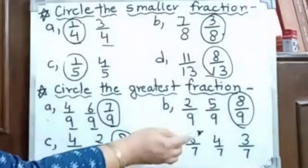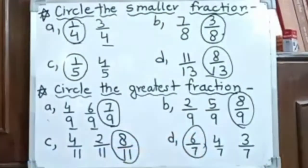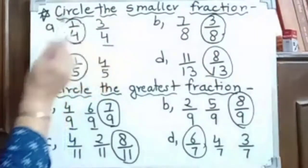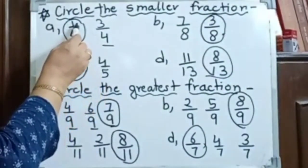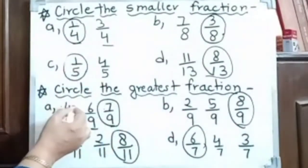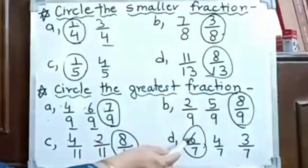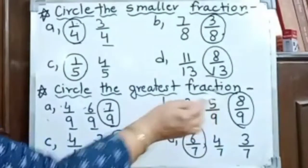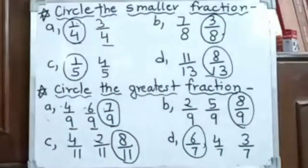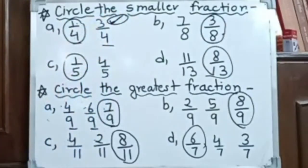Here we have 6 by 7, 4 by 7, and 3 by 7. Which one is greater? Greater numerator — 6 by 7 is greater. Once again: if we have the same denominator, it's very easy. Smaller numerator is the smaller fraction and greater numerator is the greater fraction. Always just look at the numerator when the denominator is the same. Keep your eye on the numerator and then compare the numbers.